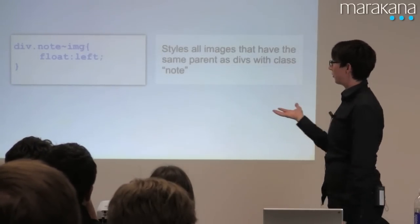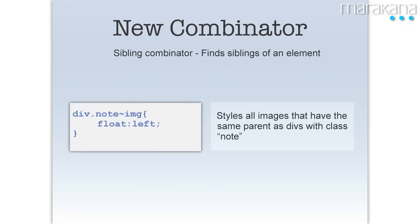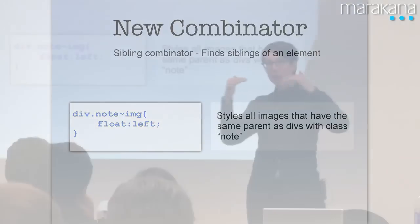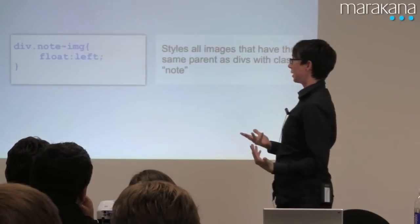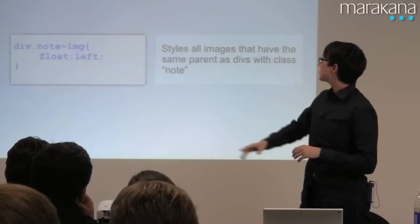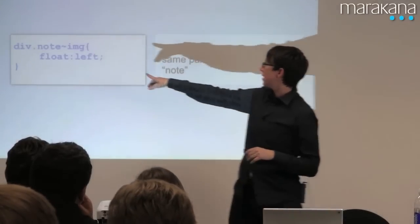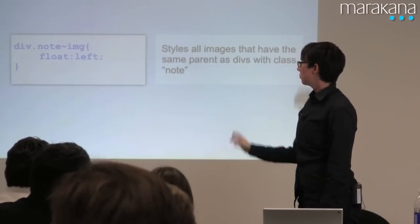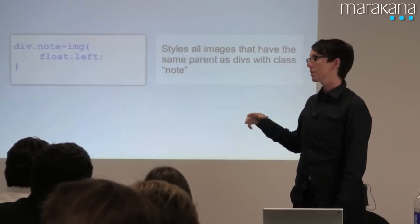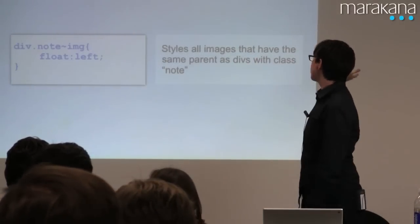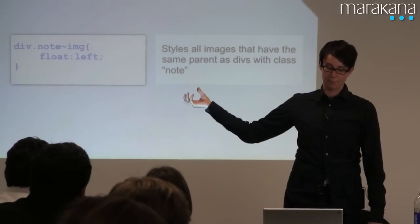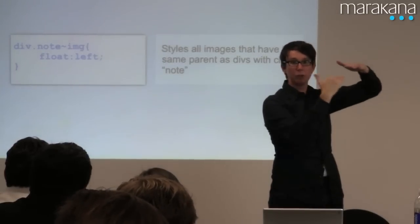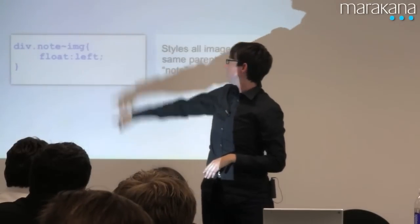Additionally, we have this new combinator. CSS is kind of venturing into territory that was once more just the territory of JavaScript. You're able to drill down through the DOM in a more specific way than you used to be able to. We've had this with the greater-than sign — the sort of arrow symbol — saying something is a parent of something else. Now with the tilde, we have a sibling relationship, so all images that are at the same level of the DOM as this note div.